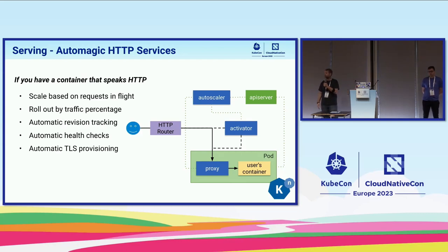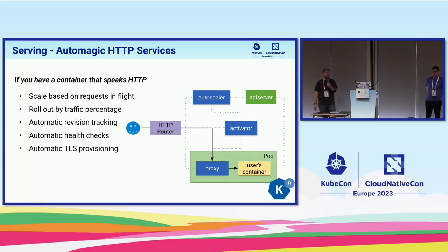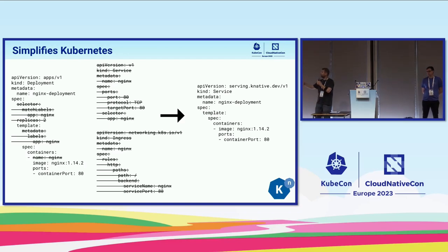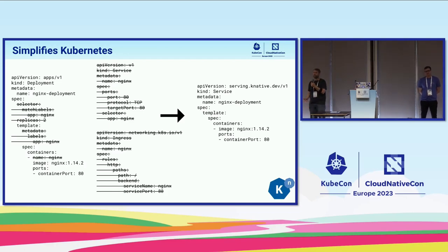We take point-in-time snapshots of your application, so if you make changes and need to roll back, it's very easy. We make an exact copy of the configuration and your code that you can roll back to as needed. We also add automatic health checks and automatic TLS provisioning. The nice thing is you can go from a lot of YAML — a deployment, a service, an ingress — to just 10 lines with Knative, which makes it easy to deploy applications.